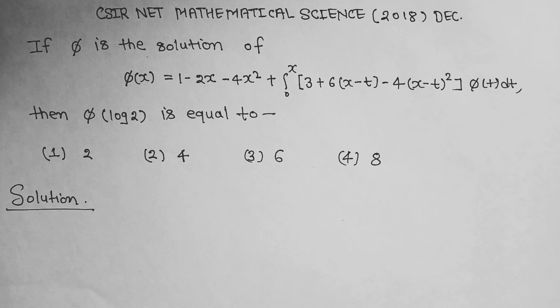CSIR NET Mathematical Science 2018 December question: If φ is the solution of φ(x) = 1 - 2x - 4x² + integral from 0 to x of [3 + 6(x-t) - 4(x-t)²]φ(t)dt, then φ(log2) is equal to: (1) 2, (2) 4, (3) 6, (4) 8.